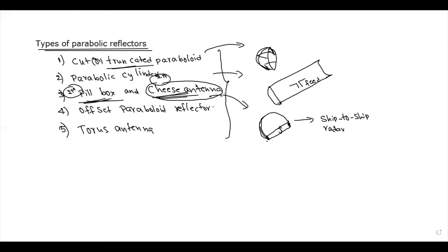The cheese antenna is enclosed by two parallel conducting plates, perpendicular to each other. The spacing of the Pillbox antenna is less than one wavelength. This spacing constraint is an important characteristic of the Pillbox and cheese antenna designs.